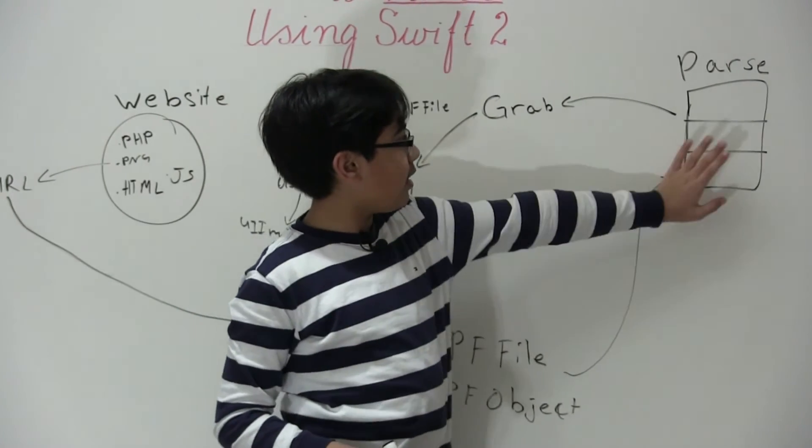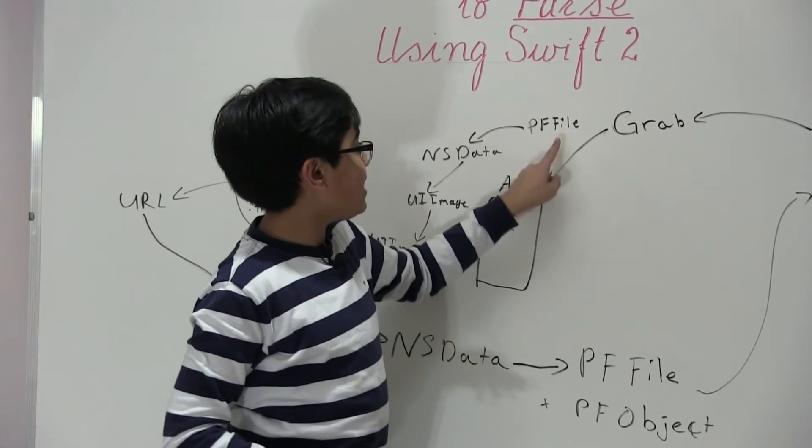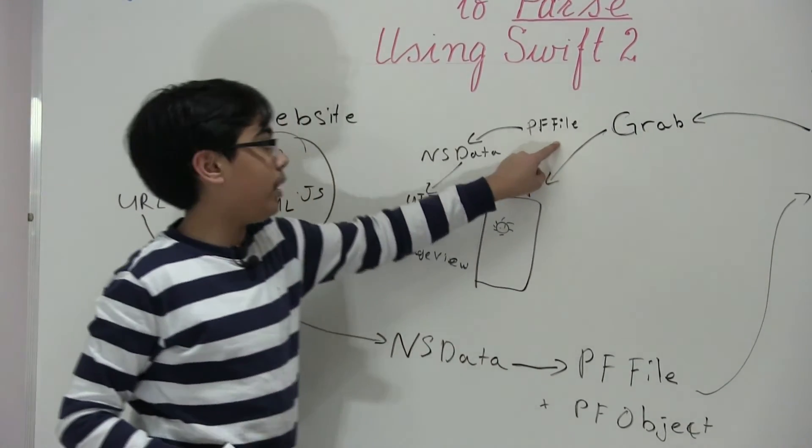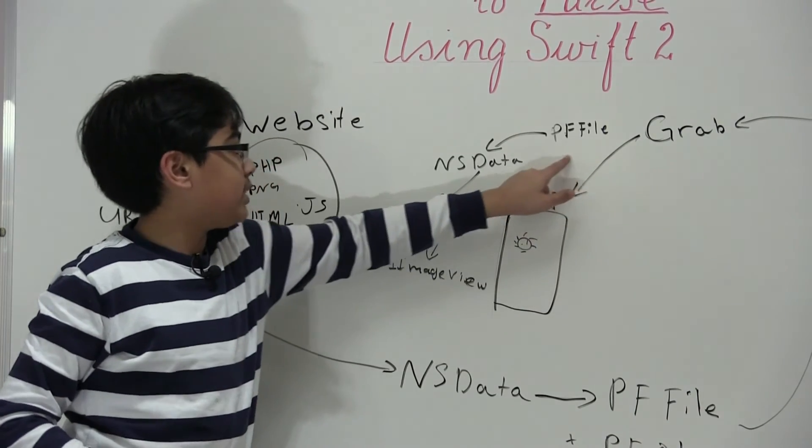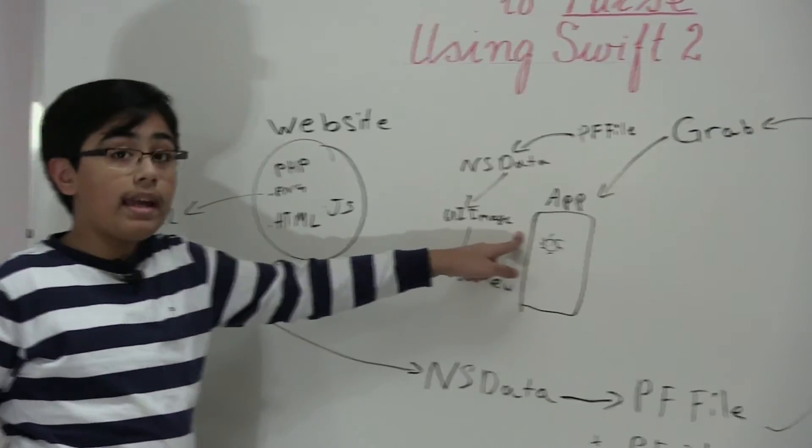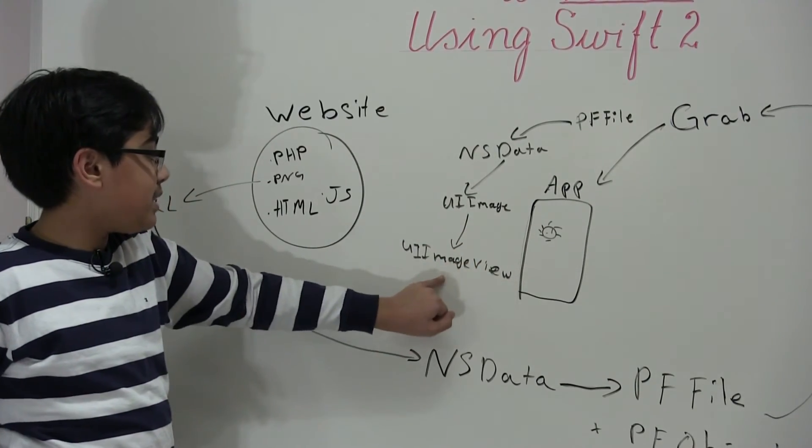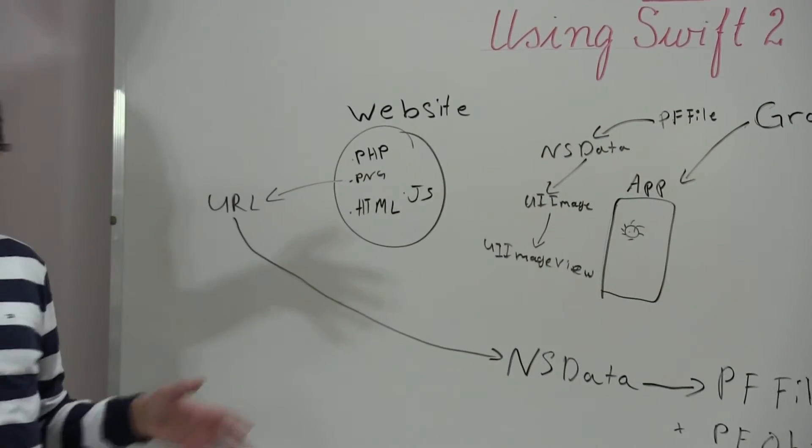Then we download it from parse back onto our app. Then our app takes the PF file that we uploaded to parse. It extracts it from the data that we grabbed from it. It's going to convert that to NSData back. Then it's going to convert that into a UI image. And then we're going to put this in a UI image view. And that was the simple explanation of how this app works.